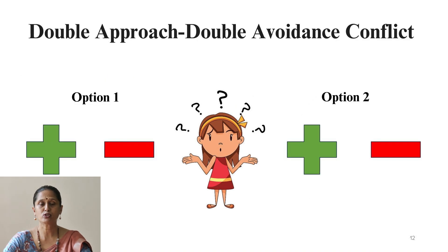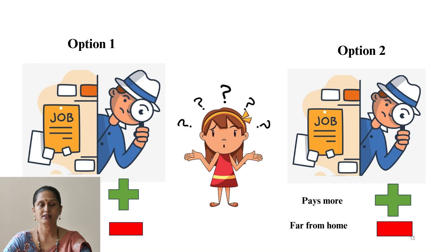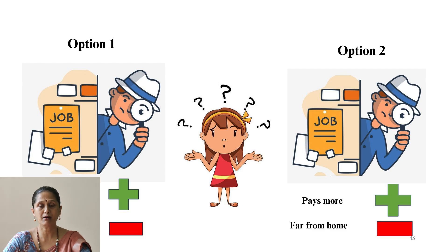Double approach-double avoidance conflict was not proposed by Kurt Lewin. This type of conflict involves two options, each having both positive and negative features. For example, job one is close to one's home but pays less, while job two is far from home but pays more. Choosing between these two job options is a double approach-double avoidance conflict.